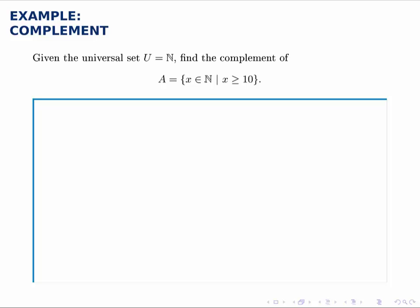And again, we could read that A is the set of all X in N, such that X is greater than or equal to 10. So it's all the natural numbers starting at 10 and going up.